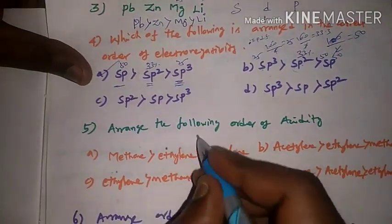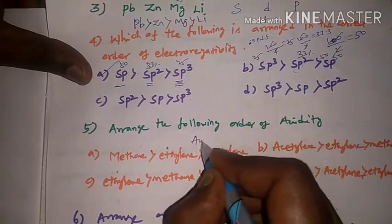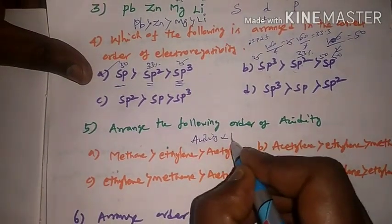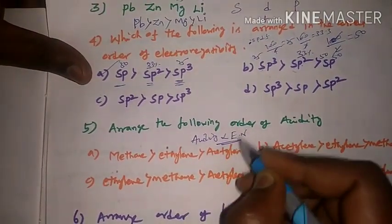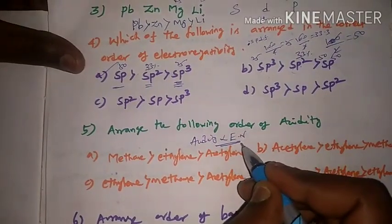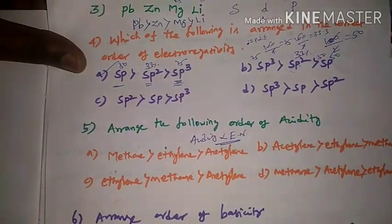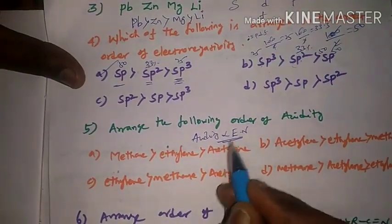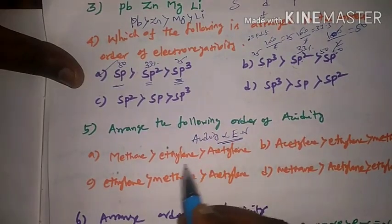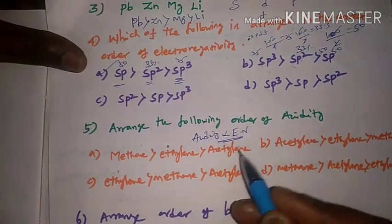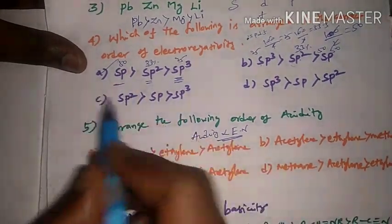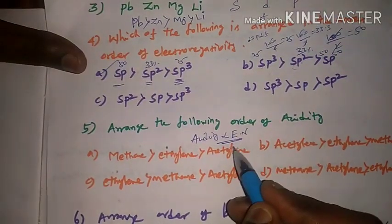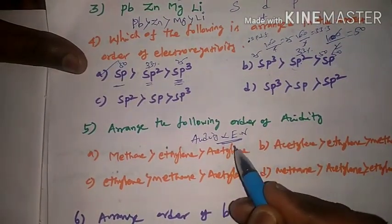Acidity is directly proportional to electronegativity. Electronegativity is associated with acidity. S-character is also associated with both acidity and electronegativity — this is the same relationship.